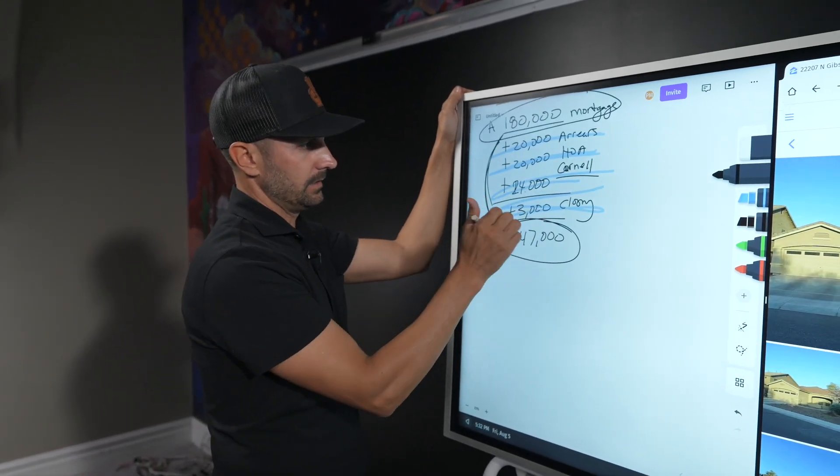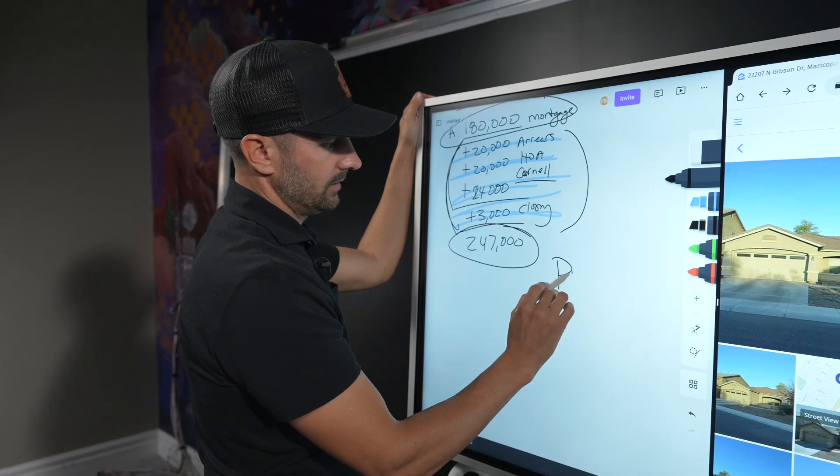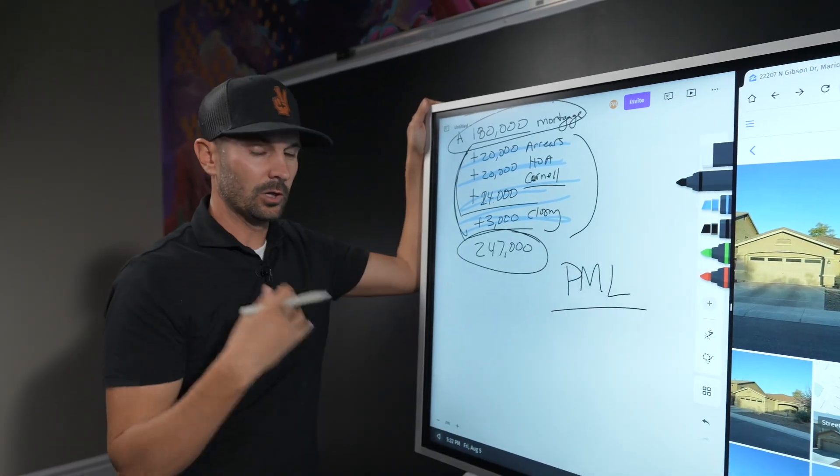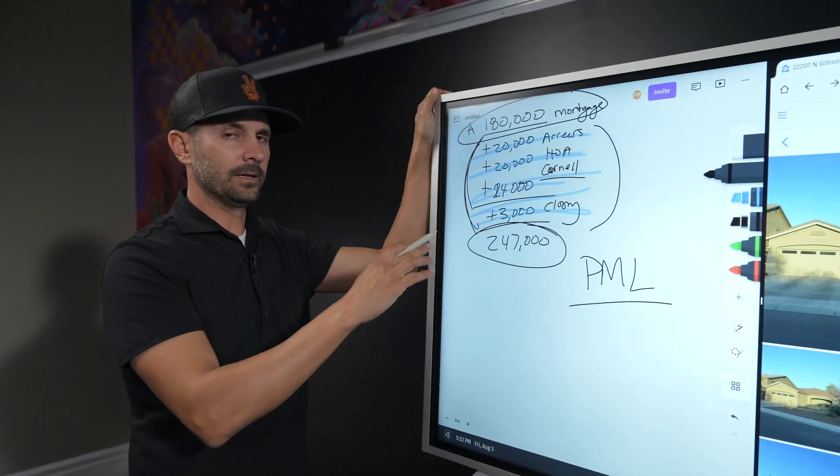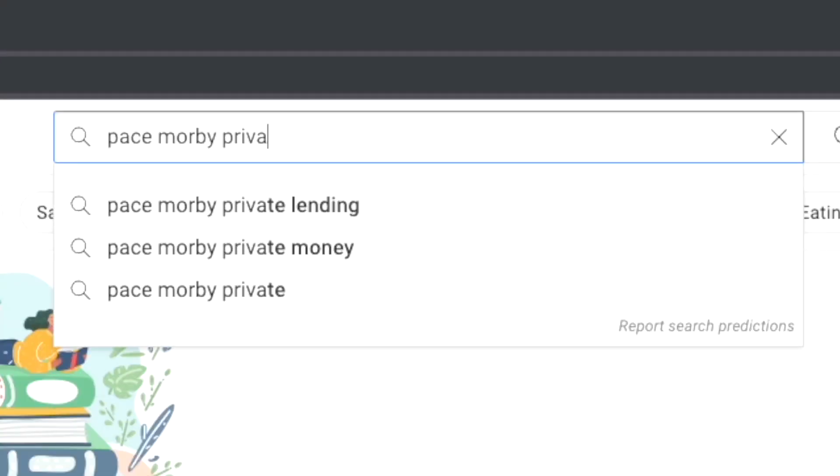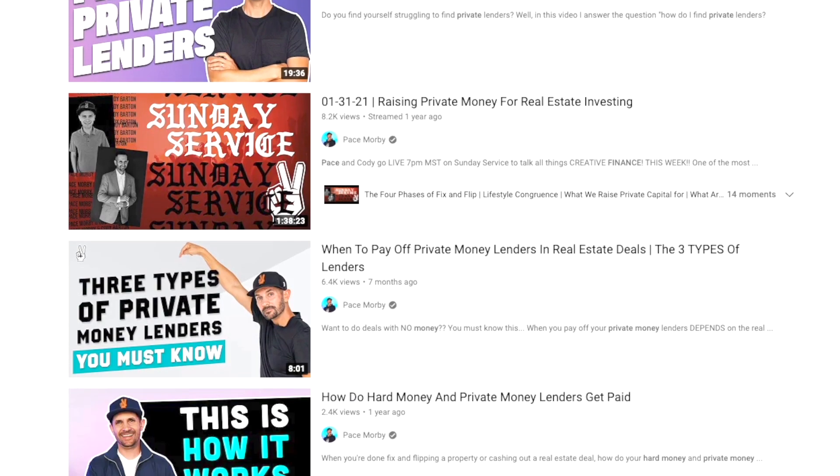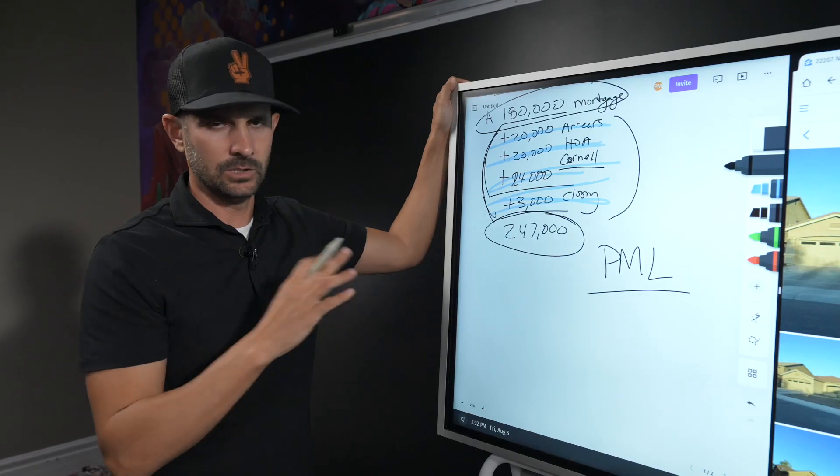Where did I come up with the money for this other chunk? This other chunk is a private money lender. If you guys want to learn how to raise private money and where that money comes from, type in YouTube, Pace Morby, private money. I have like 15 or 20 videos on just that topic.